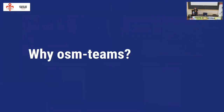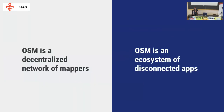Why OSM Teams? OSM Teams exists to address challenges that many groups face in OpenStreetMap. OSM is a decentralized network of mappers — even a decentralized social network of mappers. It's also an ecosystem of disconnected applications, with lots of third-party applications using different data sources about mappers and the map data they're producing, all feeding into the centralized place of OSM itself.